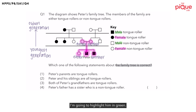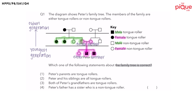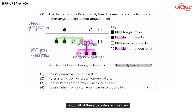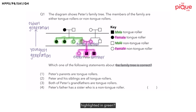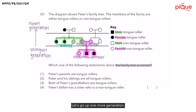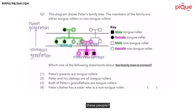Let's focus on the father first — I'm going to highlight him in green. The father is also connected to three people. These three people are his siblings, and all of them are his sisters. So how would Peter address these three people? Peter will call them his aunties. Let's go up one more generation. Peter would address these two people at the top as his grandparents.